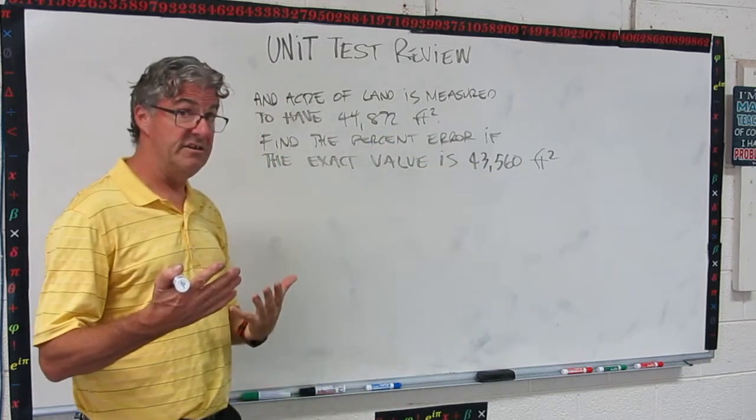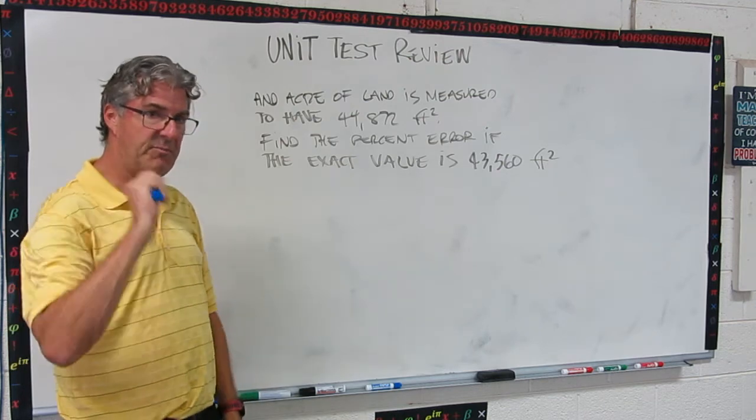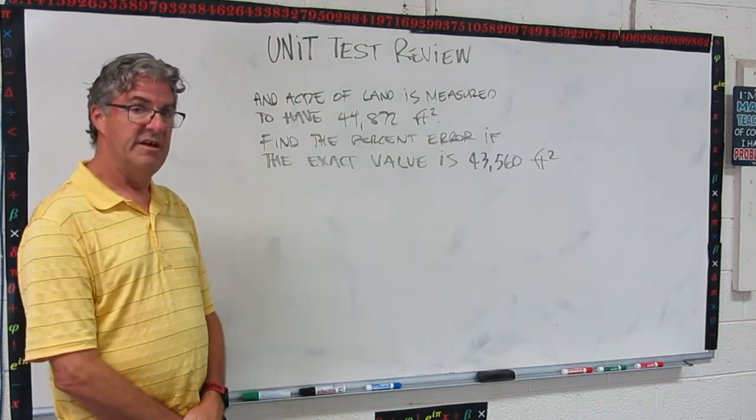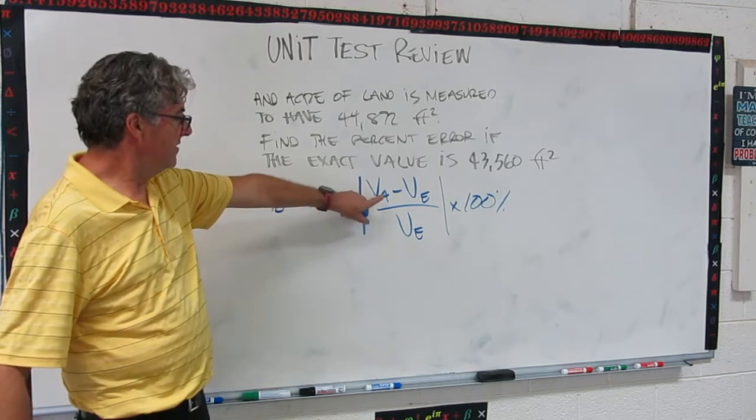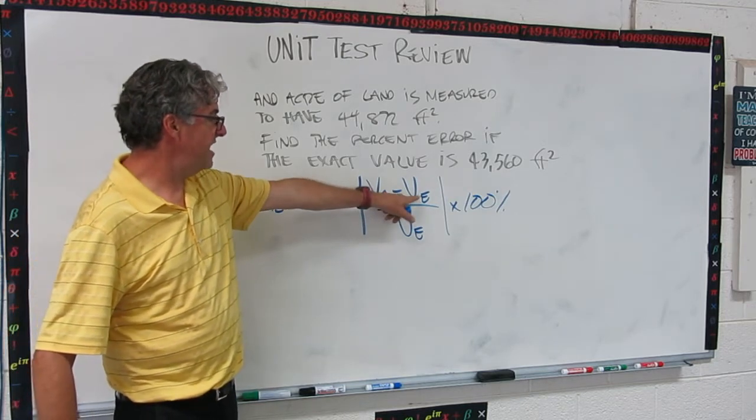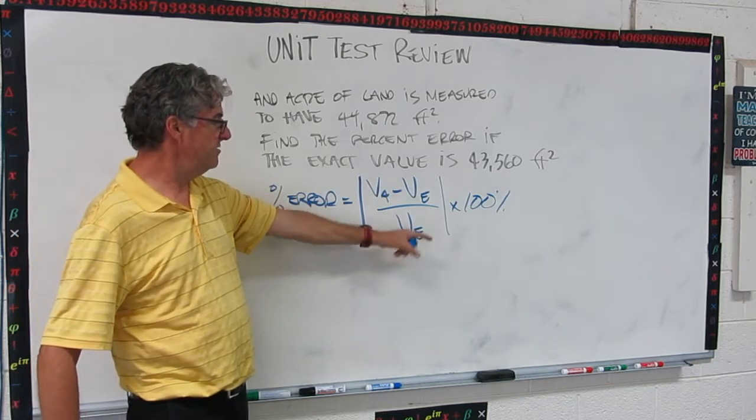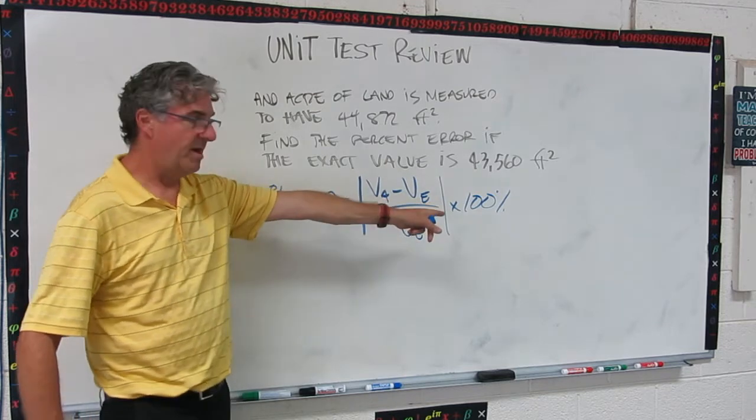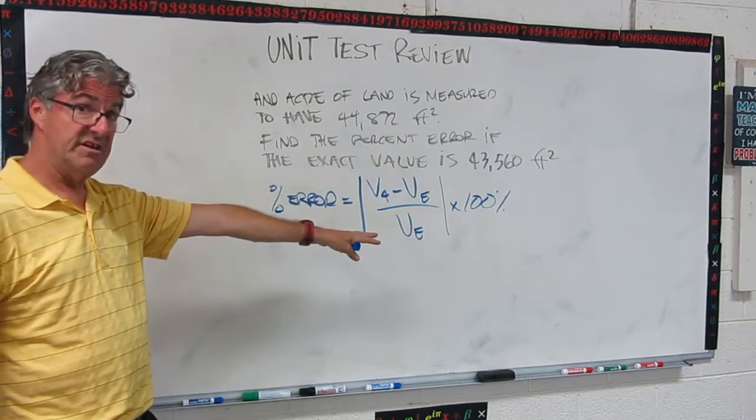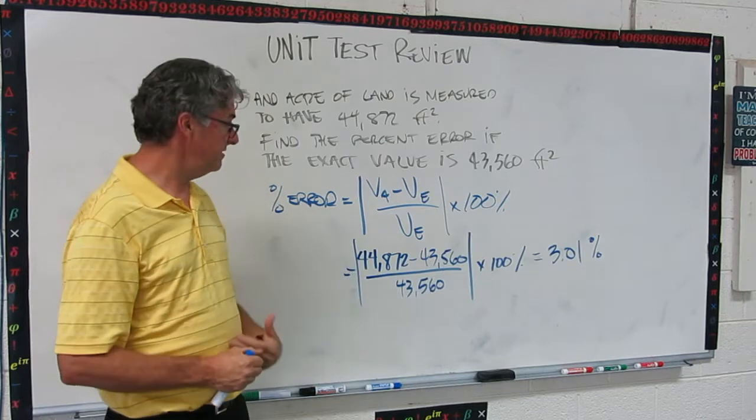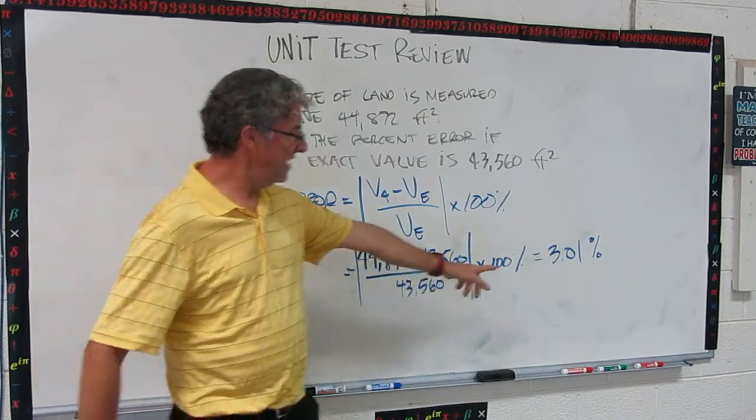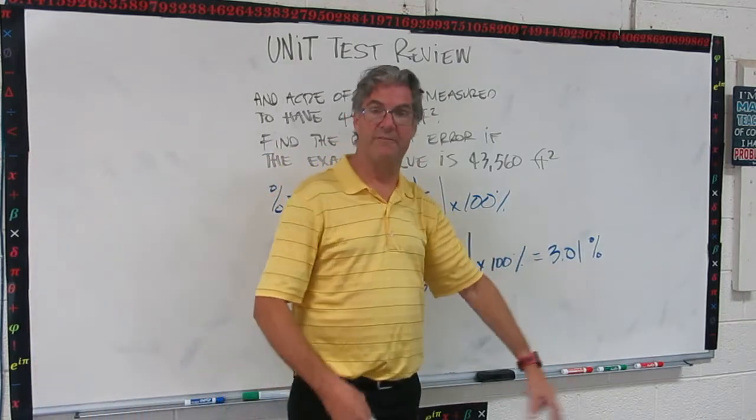So here's our measured value, here's our exact value. Now there's a formula that you need here. So I'm going to ask you to pause the video, dig up that formula, and do the calculation. So the approximate value minus the exact value over the exact value, take the absolute value, multiply by 100%. So if you haven't done that calculation yet, do it now. Okay, let's see how you did. When I crunched the numbers, I got 3.01% for percent error.